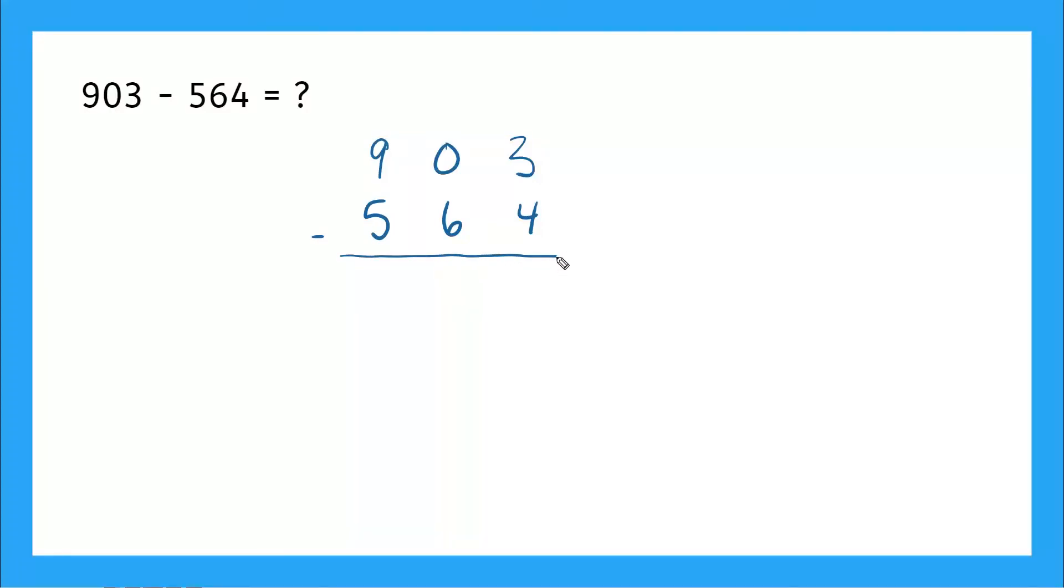So what place do I start in? Yeah, the ones place says three minus four. Can we do that? No. So we need to go over to the tens place and borrow. But we have a zero here. So what do we have to do?